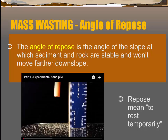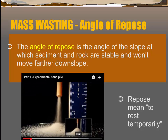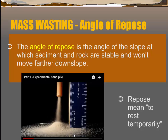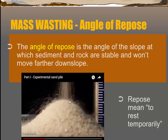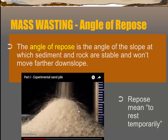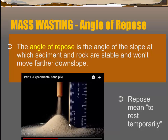Here's an example of dry sand coming down through a tube, forming an angle of repose of about 30 degrees. You can see some grains jumping off — if the slope is too steep, grains slide down until the angle stabilizes at about 30 degrees.